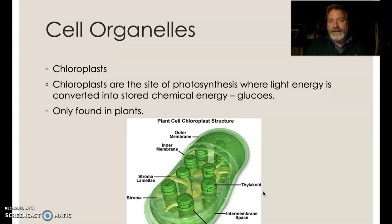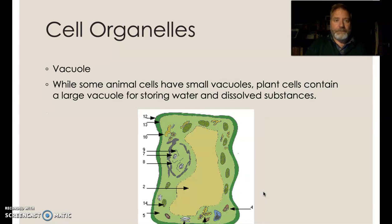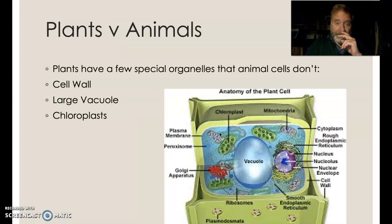Chloroplasts are found in plant cells and are really important — these are the things that take energy from the sun and create glucose, that stored chemical energy that the producer makes for itself. The plant also has mitochondria so it can take that glucose and burn it. Plants also have a large vacuole — a large space inside the plant cell basically full of water. It also stores waste and chemicals the plant needs, so it's a big storage vacuole that takes over a great deal of the cell.